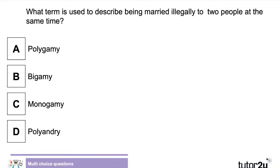What term is used to describe being married illegally to two people specifically at the same time? Is it polygamy, bigamy, monogamy, or polyandry? The answer is B, bigamy. Polygamy means being married to multiple people, not necessarily two — it could be more than two, and in some societies that might not be illegal.